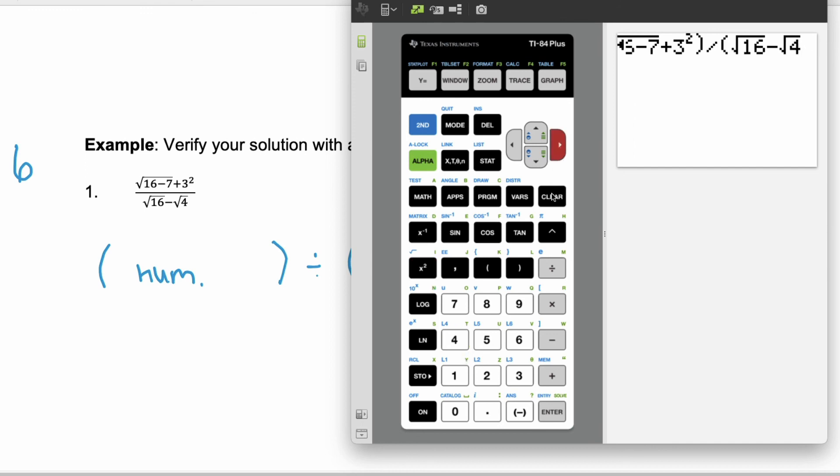Hit the arrow over again to get out of that square root. I can close my parentheses and I'll hit enter and we get the same answer, 6.